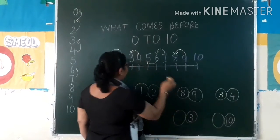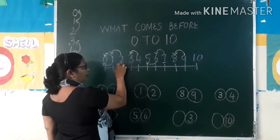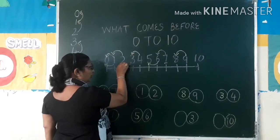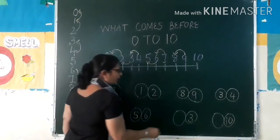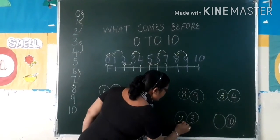And what is before three? Three yahan. Three yahan. Three. Aur three ke before kya number hai? Aise karke dekhen yahan. Three ke before kya number hai? Two.